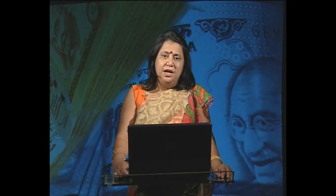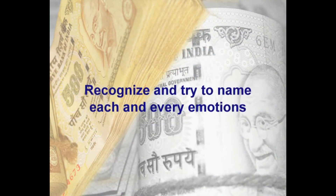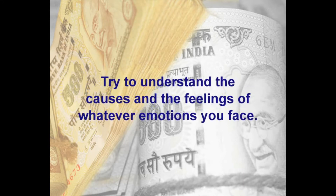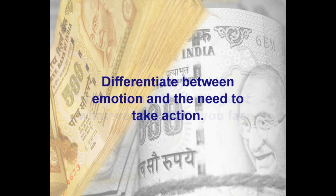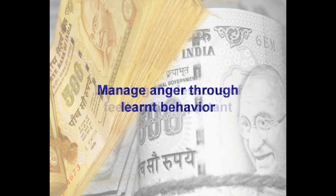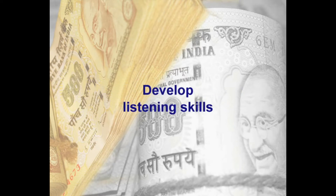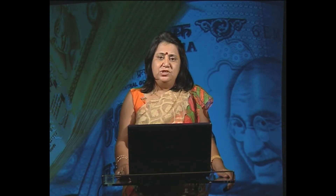There are nine basic strategies to build your emotional intelligence: take time for mindfulness; recognize and name each emotion; understand the causes of whatever emotions you face; differentiate between emotion and the need to take action; prevent depression through learned optimism; manage anger through learned behavior; learn the lessons of feelings; use gut feelings in your decision-making; and develop listening skills.